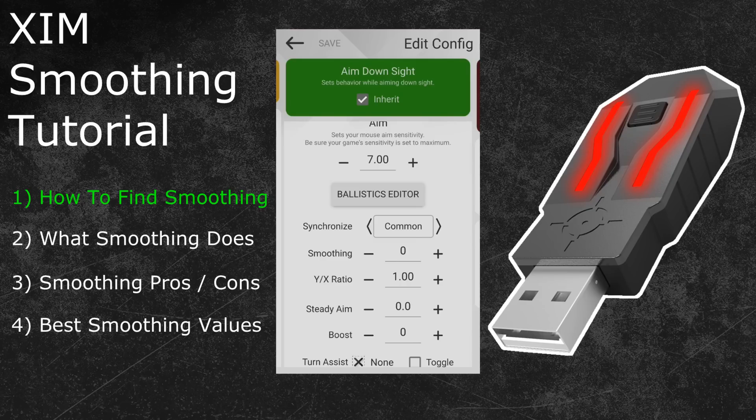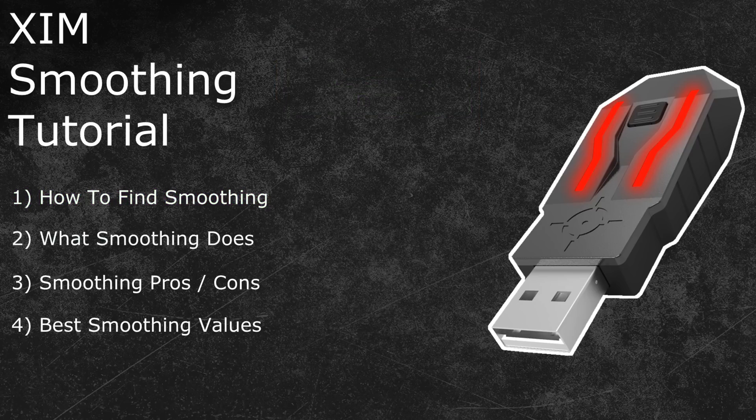It is up to you if you want to use the same smoothing values for hip and aim down sights, or completely different ones for each mode. In the second topic we will take a closer look at the smoothing feature to find out what it actually does. The idea of smoothing is to reduce or even fully remove mouse stutter.